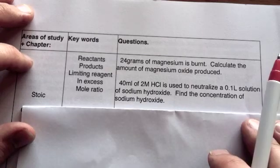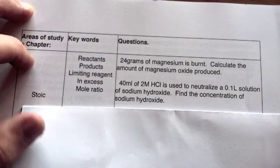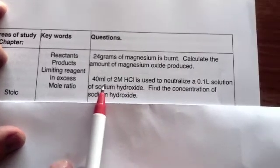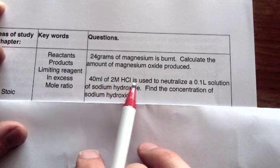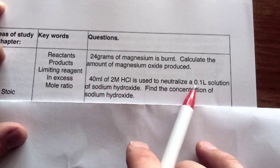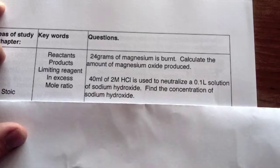So I'm going to go through two problems here. One's going to be just a general concentration problem and the other one's going to be a limiting reagent problem. So the first thing we're going to look at is this problem here. Let's move it into the screen. 40 mls of 2 molar HCl is used to neutralise a 0.1 litre solution of sodium hydroxide. Find the concentration of the sodium hydroxide.